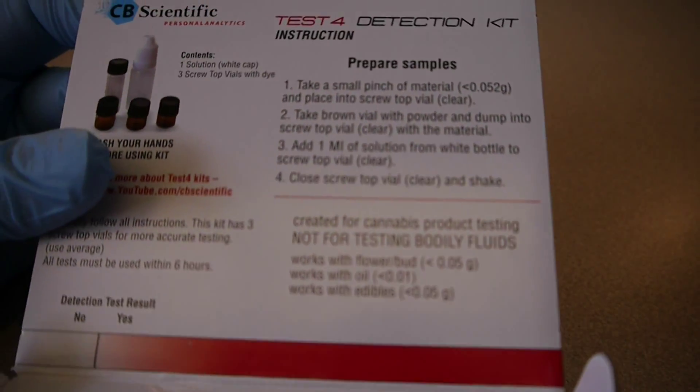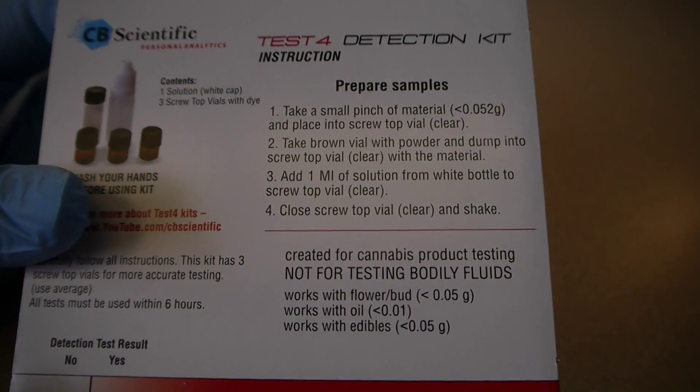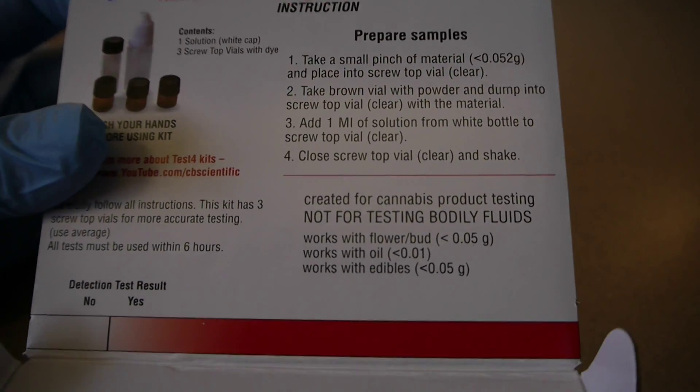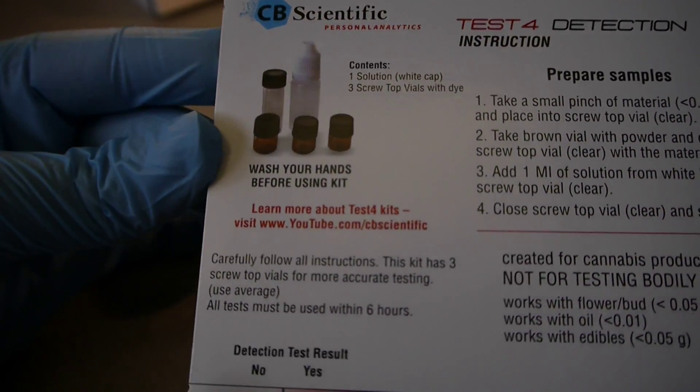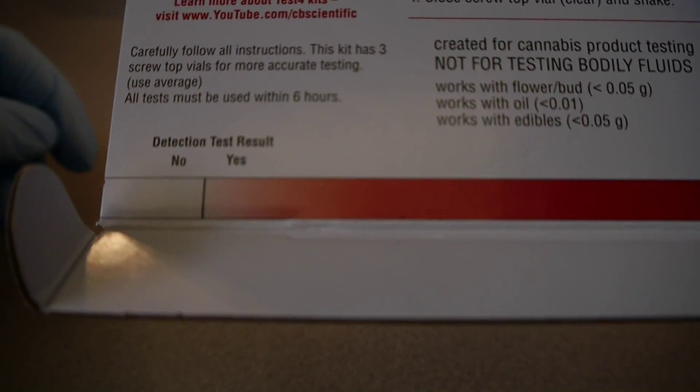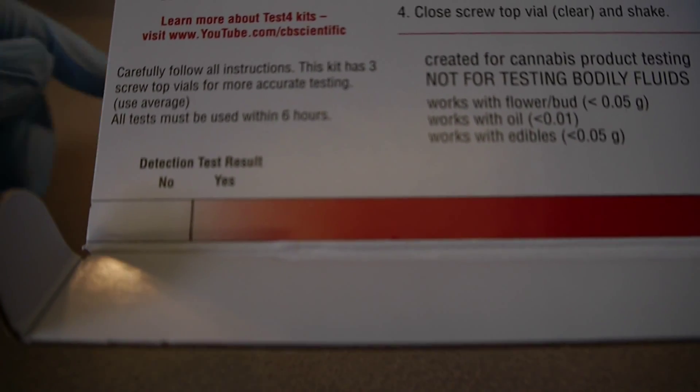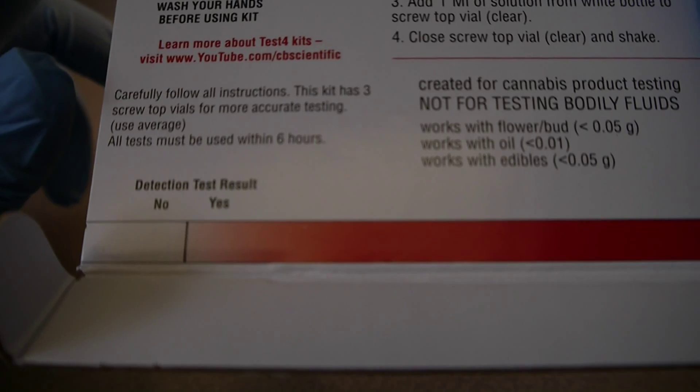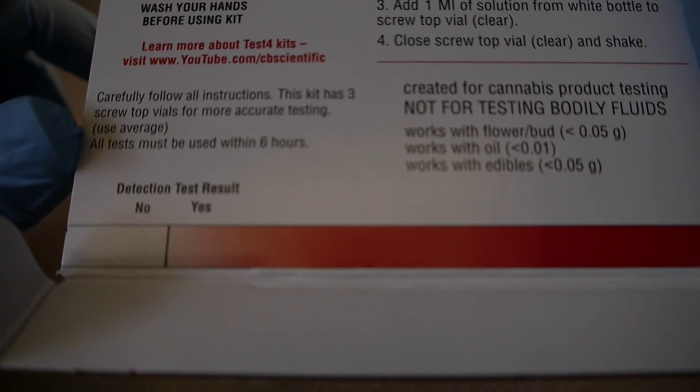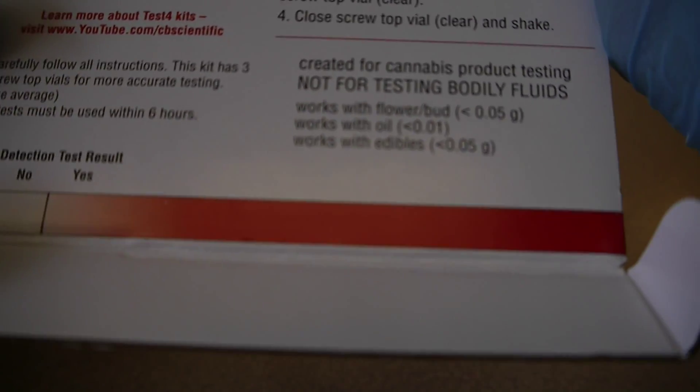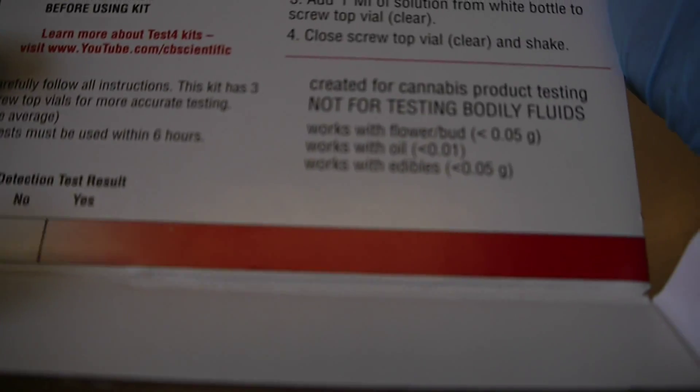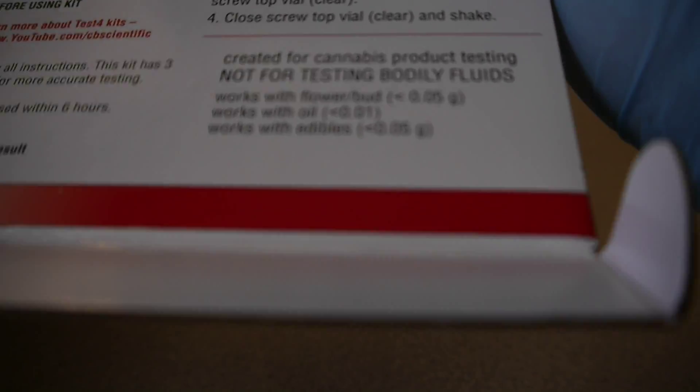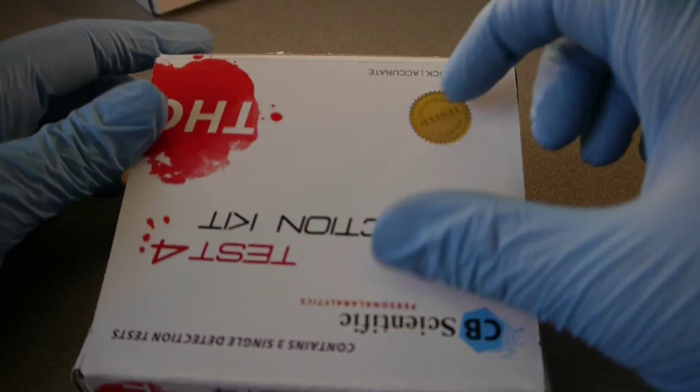Now let's get into some of the language down here. These are your instructions, as you can see. You can see how much to use right there. We can also see the ingredients up here. But again, the importance deals with this chart at the bottom. This is the detection chart. This says a no or a yes for a positive or negative detection. And as you can see, a yes will be any gradient of red all the way down to very dark red. So that is the THC detection kit.